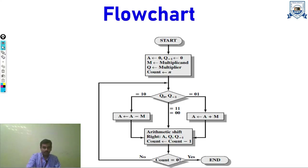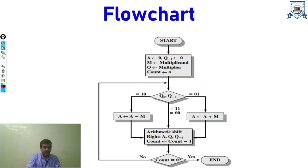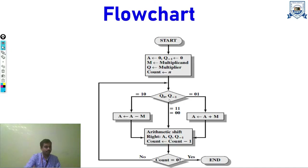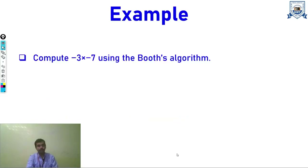We shift AQ and Q-minus-1 using arithmetic right shift, then decrease the count. In the case of 1-0 or 0-1, we first subtract or add the multiplicand with the accumulator, then shift AQ Q-minus-1 arithmetic right once, and update count by count minus 1. If count reaches 0, we end and the result is stored in AQ. If not, we check Q0 Q-minus-1 again.